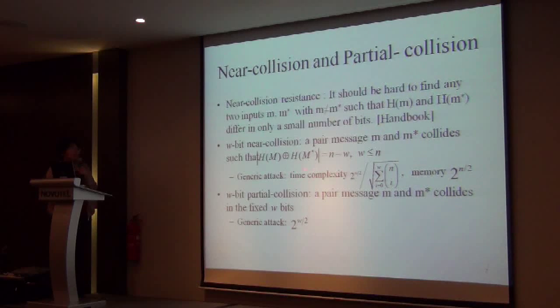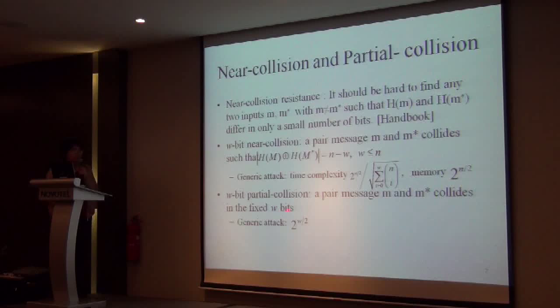This is a general attack. The lower bound of the time complexity is smaller than 2^(W/2), but the memory is more than 2^(N/2). So if the attack complexity is larger than this lower bound, we use another notion to express that: partial collision. A W-bit partial collision means a pair of messages M and M* collide in the first W bits. The general attack complexity is 2^(W/2).